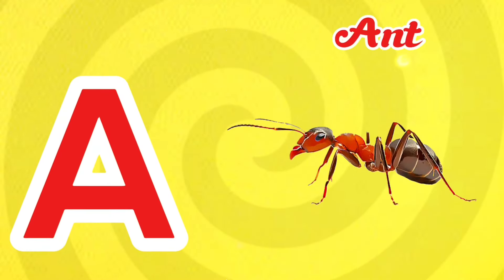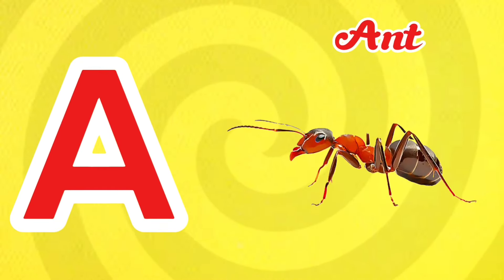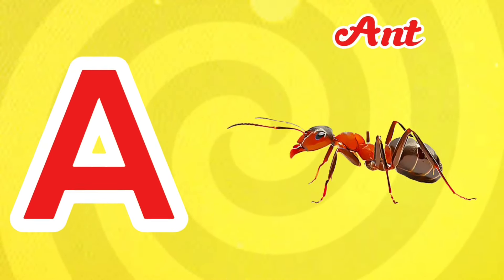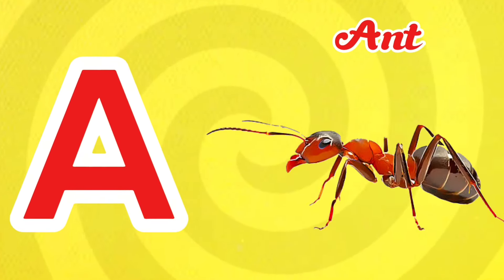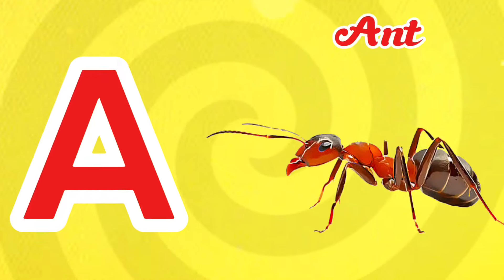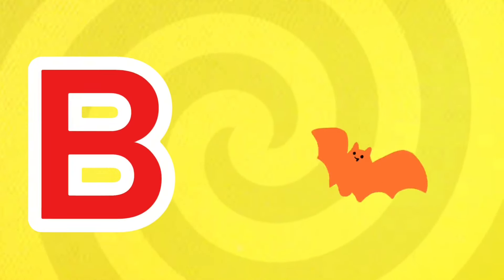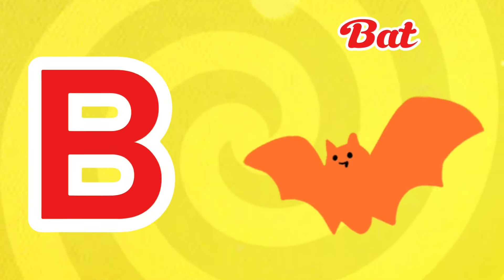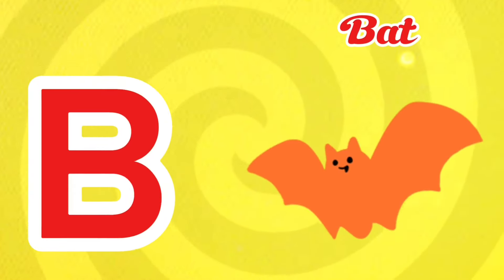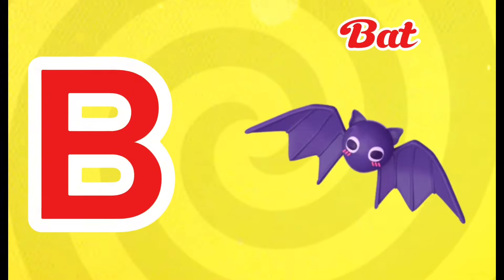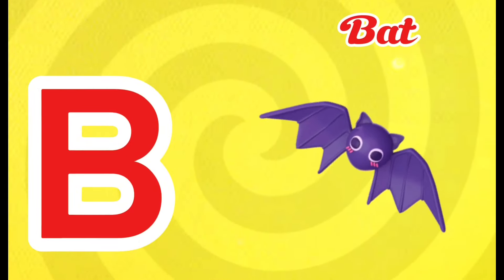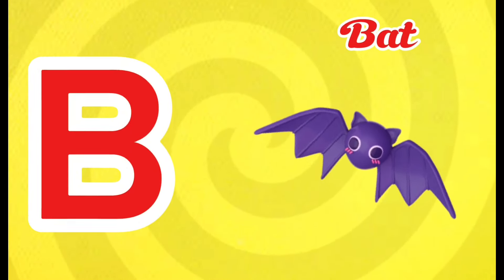A is for Ant. A-a-ant. A is for Ant. A-a-a. B is for Bat. B-b-bat. B is for Bat. B-b-b-b.